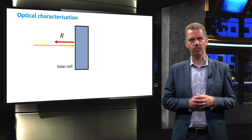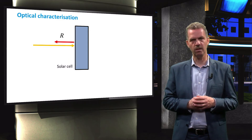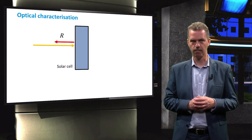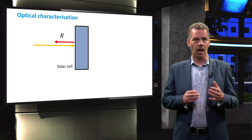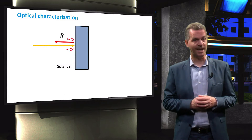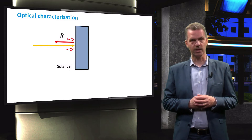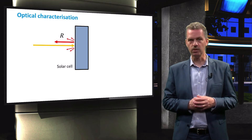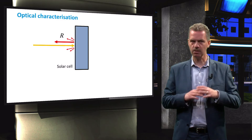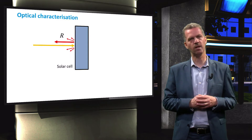Subsequently, light can reflect on any interface between different media inside the solar cell. If the surface of the solar cell is textured, part of the total reflection will be diffused, meaning that light will be scattered away from the surface in different directions.